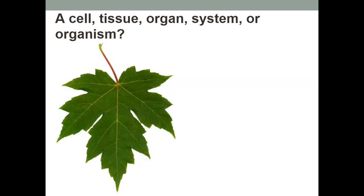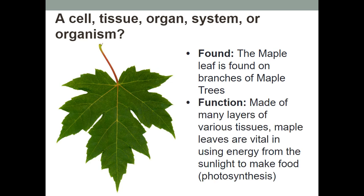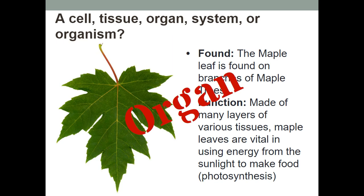And our last one — here is a leaf. The maple leaf is found on the branches of the maple tree, made of many layers of various tissues. Maple leaves are vital in using energy from sunlight to make food, or photosynthesis. So it's made up of tissues — what do you think it's going to be? Yes, it's an organ.